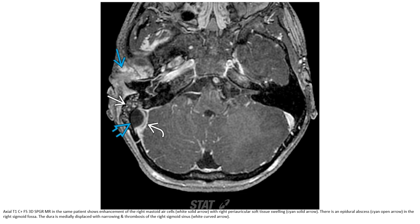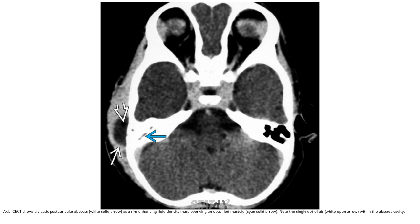Axial T1 post-contrast fat-saturated 3D SPGR in the same patient shows enhancement of the right mastoid and right periauricular soft tissue swelling. There is an epidural abscess in the right sigmoid fossa. The dura is markedly displaced with narrowing and thrombosis of the right sigmoid sinus. Axial post-contrast image shows a classic post-auricular abscess as a rim-enhancing fluid collection overlying the opacified mastoid, with a single dot of air within the abscess cavity.